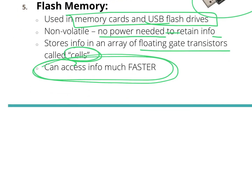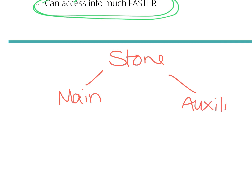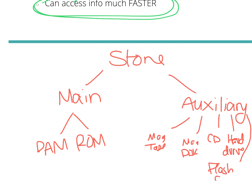To summarize storage: there are two main types — main memory, which is internal, and auxiliary memory, which is external. Main memory is broken up into RAM and ROM. Auxiliary memory splits into magnetic tape, magnetic disks, CDs, hard drive, and flash memory. You need to be able to explain those different types of storage.